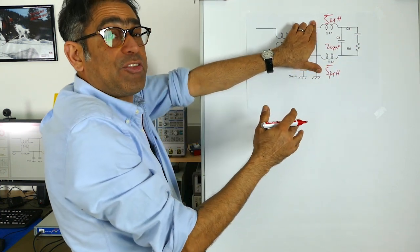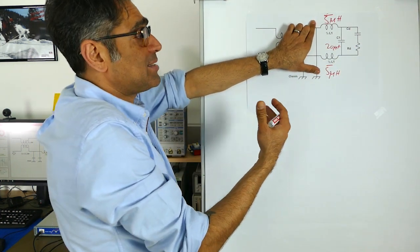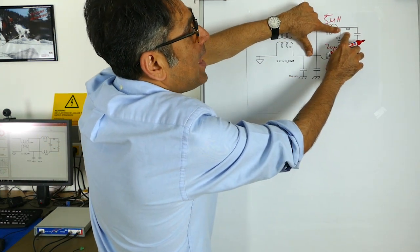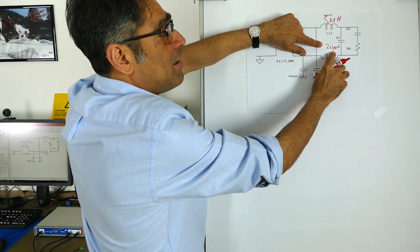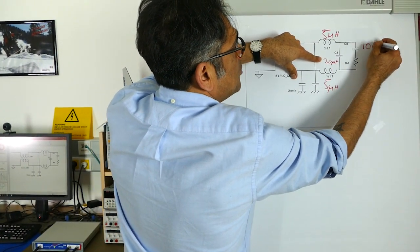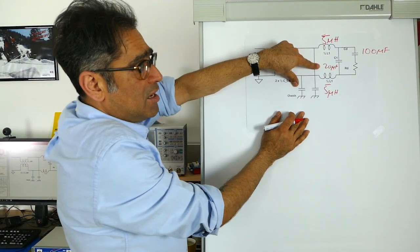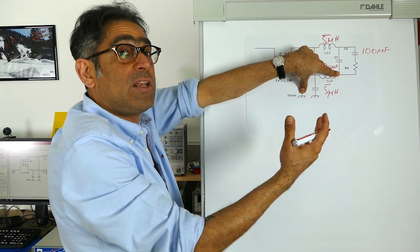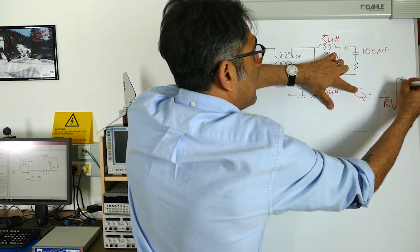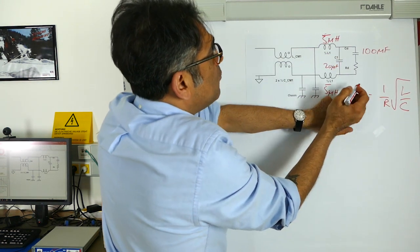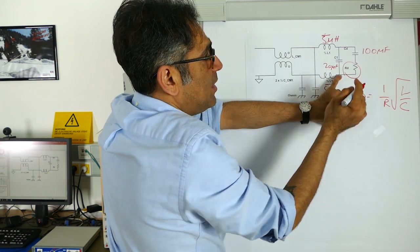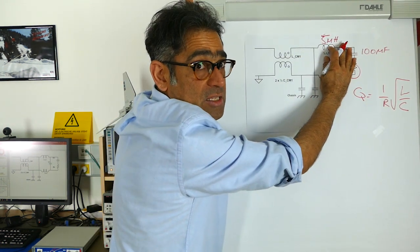In one of the previous videos we said that we needed a damping resistor and a damping capacitor to reduce the Q, and that was for stability purposes. We said that the damping capacitor had to be five times bigger than the filter capacitor — so if this is 20 microfarads, the damping capacitor is going to have to be around 100 microfarads. For a Q of around one, the equation is Q = (1/R) × √(L/C). We know L is 10 microhenries and C is 20 microfarads, so we can calculate R. This portion of the circuit is now complete.